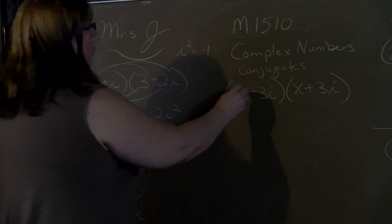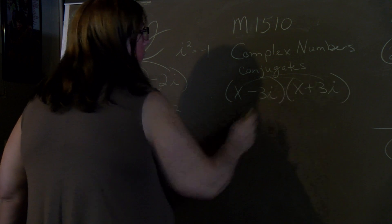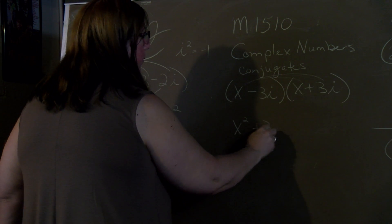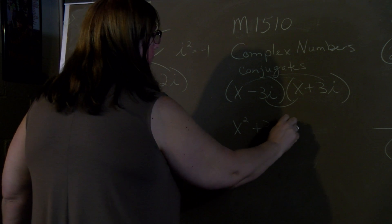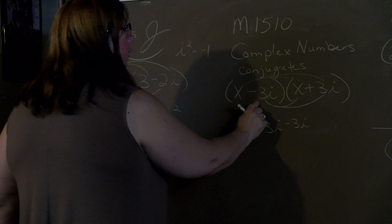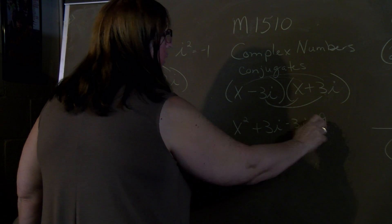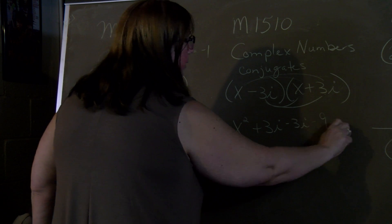So if we FOIL this, multiplying the first two, we get x squared. The outside, we get a positive 3i. The inside, we get a minus 3i. And then the last two, negative 3 times 3 is a negative 9i times i is i squared.